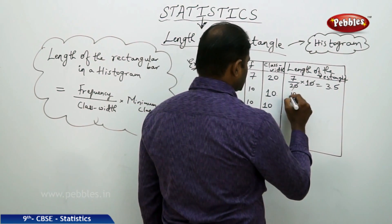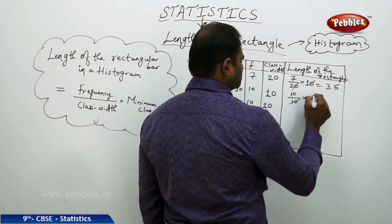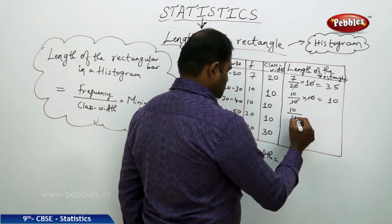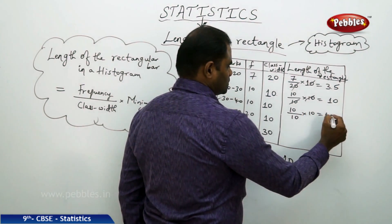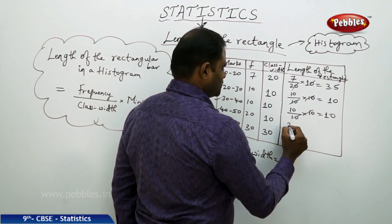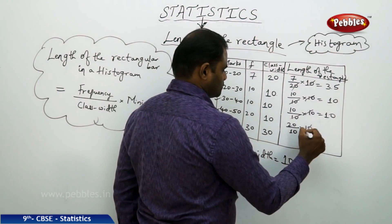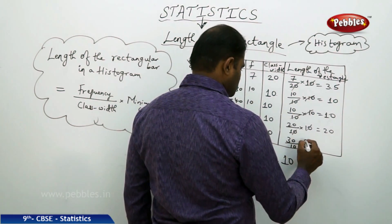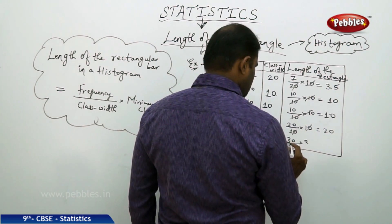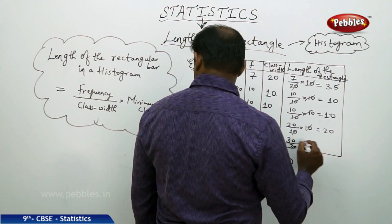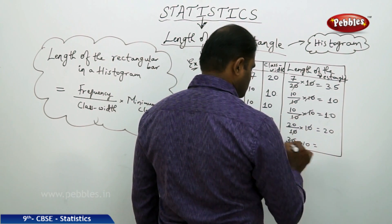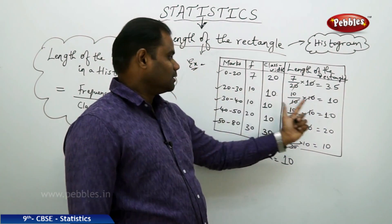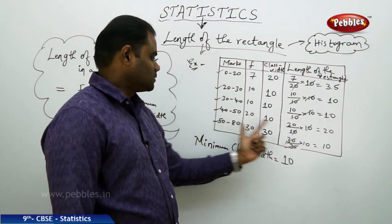Similarly, for the second class interval, frequency by class width into minimum class width gives 10. For the third interval it is also 10. For the fourth interval the frequency is 20, giving a length of 20. And finally, frequency by class width into minimum class width of 10 gives a length of 10.